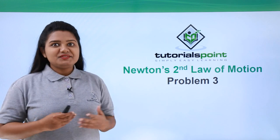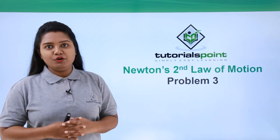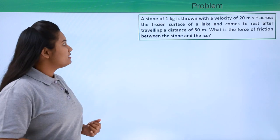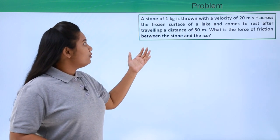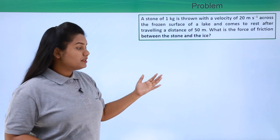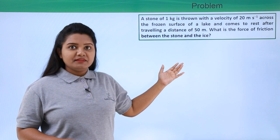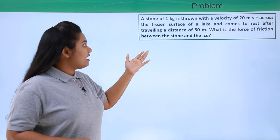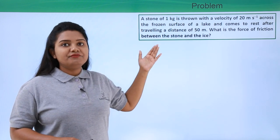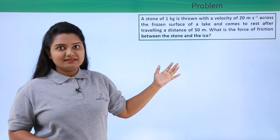Hello everyone, in this video we will be solving another problem based on Newton's second law of motion. Here is the problem which reads: a stone of 1 kg is thrown with a velocity of 20 meters per second across the frozen surface of a lake and comes to rest after traveling a distance of 50 meters. What is the force of friction between the stone and the ice?